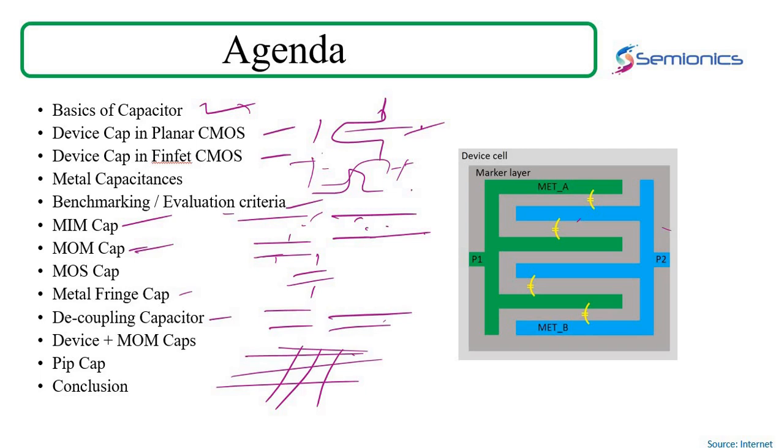Finally, we'll also see about PIP capacitor - Poly Insulator Poly. In earlier technologies, we also used to use two varieties of polys. Using that, how do we create a capacitor? We'll look into that aspect as well.